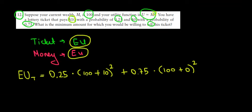Now if we calculate this, if we do the math, the expected utility that we would have from this ticket would be equal to 10,525.